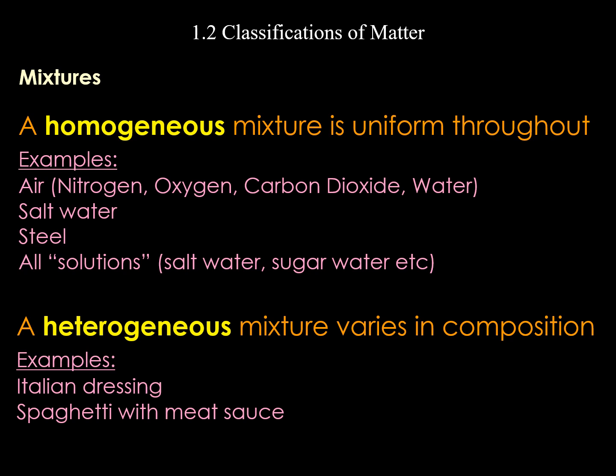Focusing on mixtures: homogeneous means one. These are examples where you look at something and only see one thing. For instance, air — you see one thing, but we know it's composed of many things such as nitrogen (about 70%), oxygen (20%), carbon dioxide, water, and other small elements. Salt water — you only see a clear liquid, but you can also separate that out.